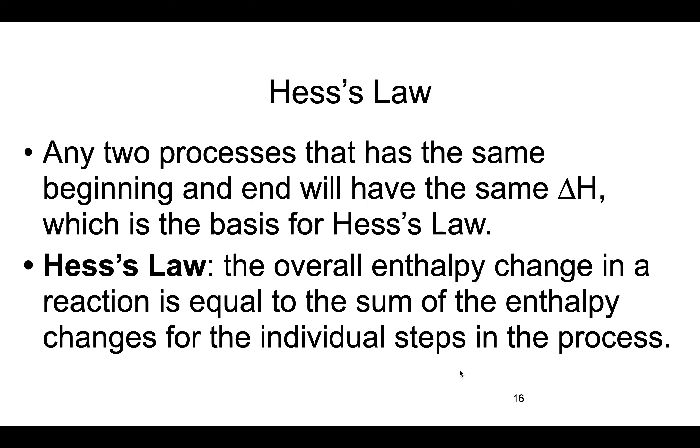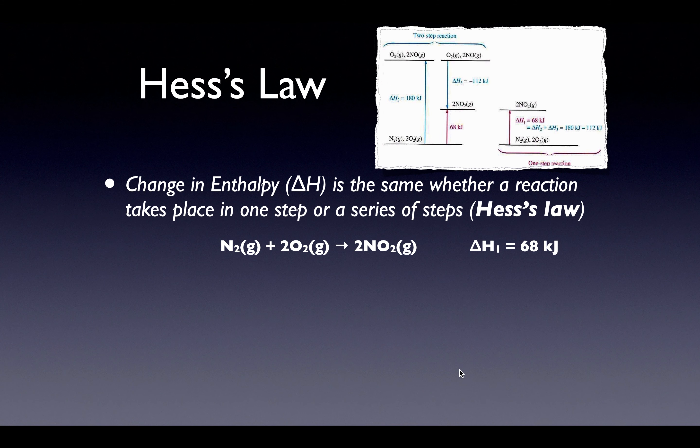This leads us to the hardest part of this chapter - this is what's going to cause the most confusion. I'll try to go through this step by step. Hess's law is saying that any two processes that have the same beginning and end will have the same delta H, which is the basis for Hess's law. Just like your food - no matter how your food is made, with the same ingredients the same food should have the same amount of energy given off or calories. The overall change in a reaction is equal to the sum of the enthalpy changes for the individual steps. The change in enthalpy is the same whether the reaction takes place in one step or multiple steps or series of steps.